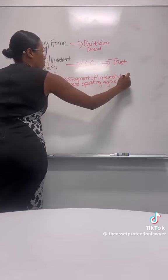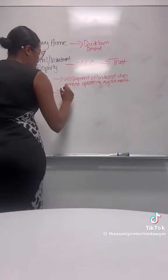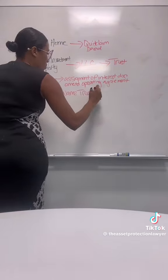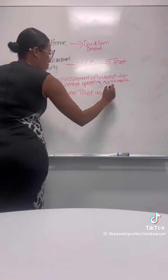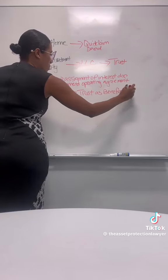Bank accounts you can leave in your own personal name, but be sure to fill out a payable on death form and name your trust as a beneficiary. You should also have a financial power of attorney in case of incapacitation.